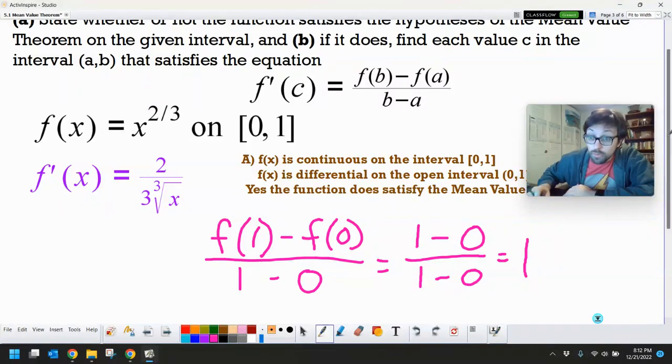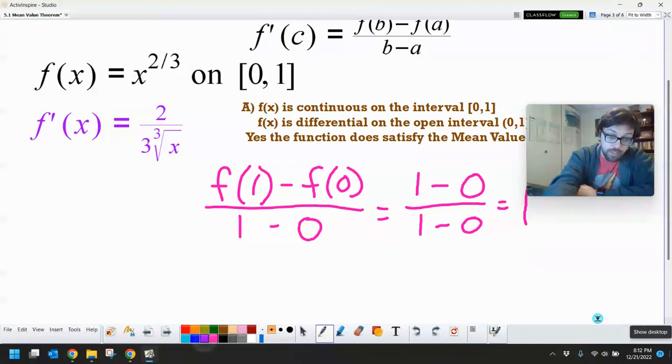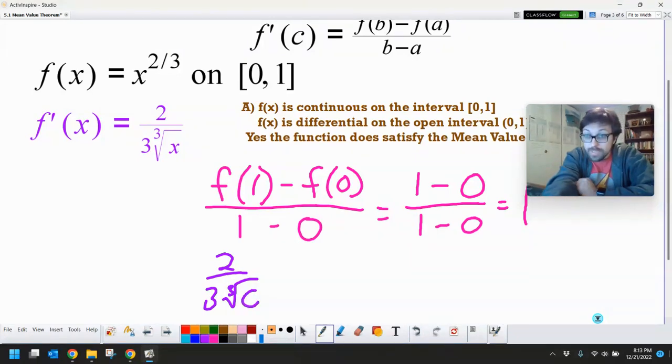So our average rate of change on that interval is one. We want to see when that derivative equals our average rate of change, when the instantaneous rate of change equals our average rate of change. So our two thirds cubed root of x, what values of C? In fact, actually, I'm even going to put in that C.